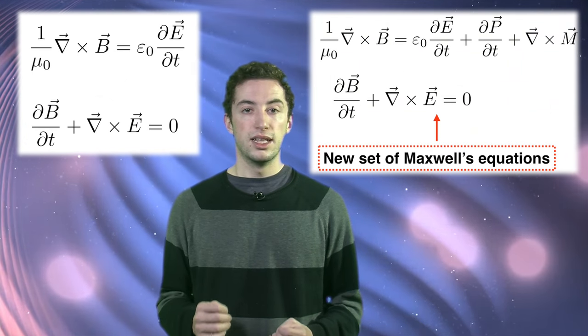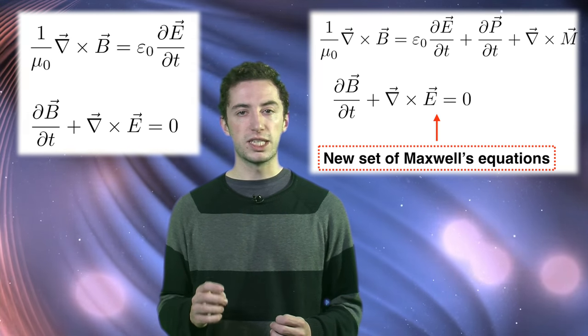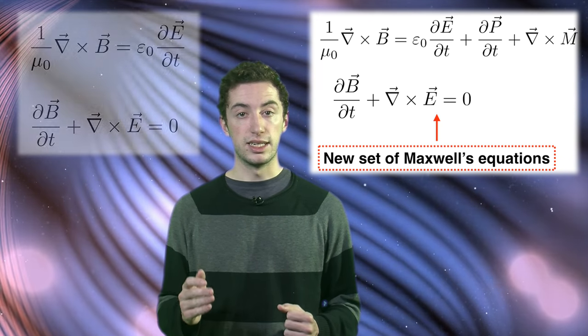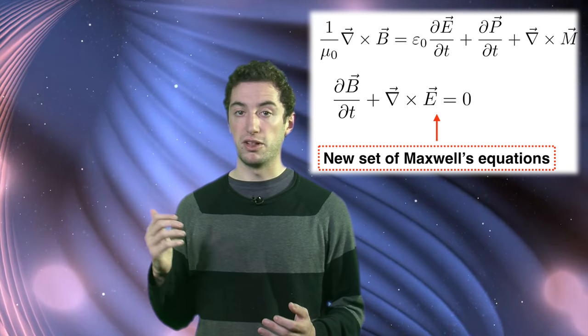The quantum effects modify Maxwell's equations in vacuum from this set of equations to this. The new equations are similar to what you would expect for light propagating in a medium with a given polarization and magnetization given by the following expressions.